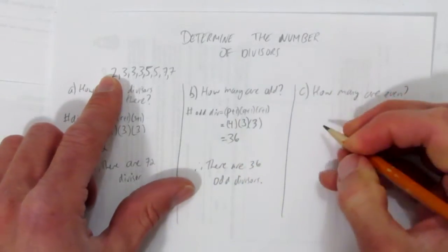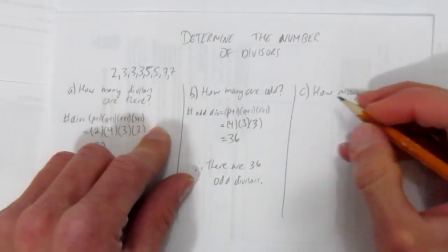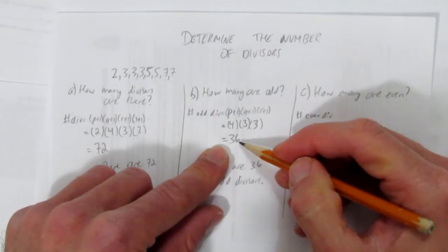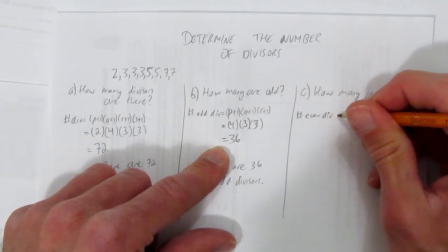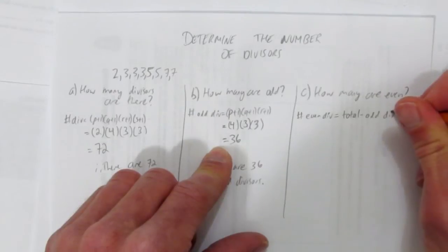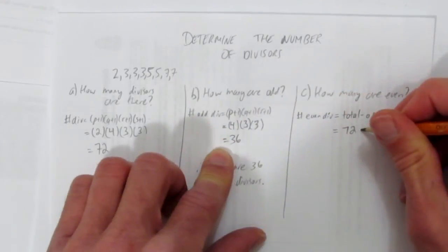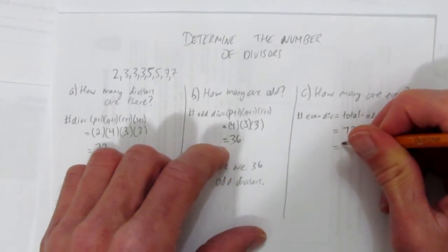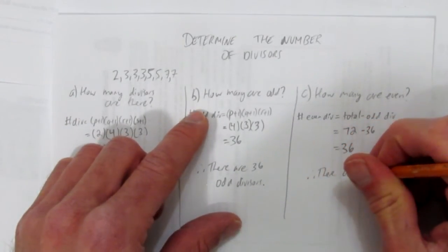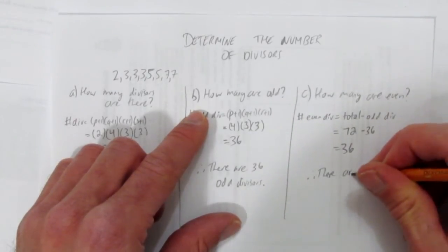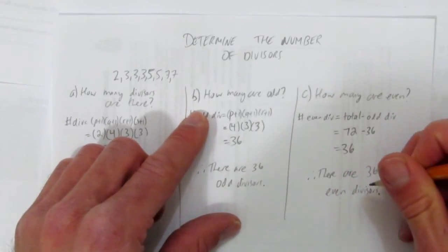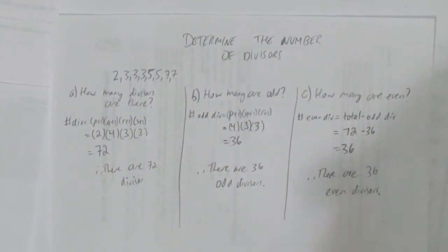Now you can use the same sort of logic to solve a question like how many of the divisors are even, but there's a way faster way. And that is to recognize that if there are this many odd divisors, then whatever is left over have to be even. In other words, the number of even divisors is just the total number of divisors minus the odd divisors. And so you just take 72, the total divisors, and subtract the 36 odd ones, which means there are 36 even divisors as well. That's faster than trying to count them all again using the formula. You could though, but this is faster. There are 36 even divisors, and so that's an example of how to determine the number of divisors.